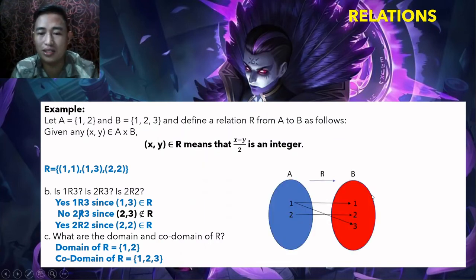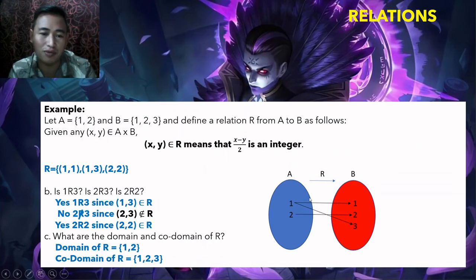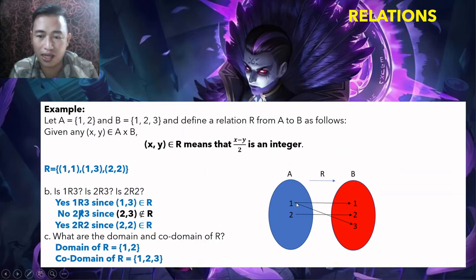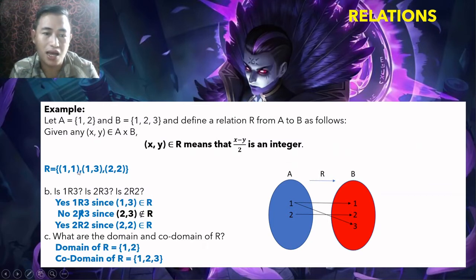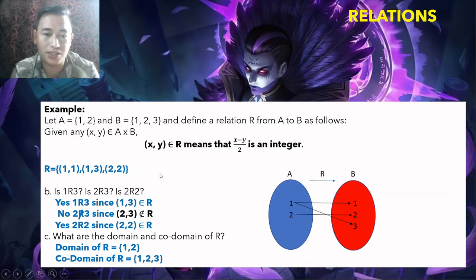Now let's draw the arrow diagram for R. From 1, there is an arrow to 1 (pair 1,1) and an arrow to 3 (pair 1,3). From 2, there is an arrow to 2 (pair 2,2).